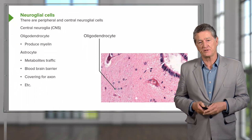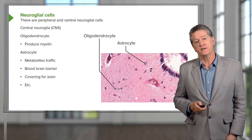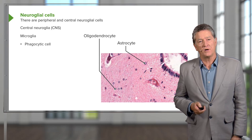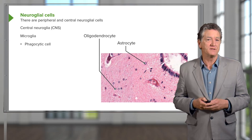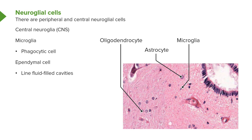You can identify astrocytes because their nuclei are larger and often lighter staining, as you see here. There is another important glial cell — the microglial cell. They're like macrophages; they're phagocytic. You can see them easily in sections because they have an elongated, sausage-shaped nucleus. Finally, the remaining type of glial cells are the ependymal cells. These line the fluid-filled cavities in the brain, such as the ventricles and also the central canal.